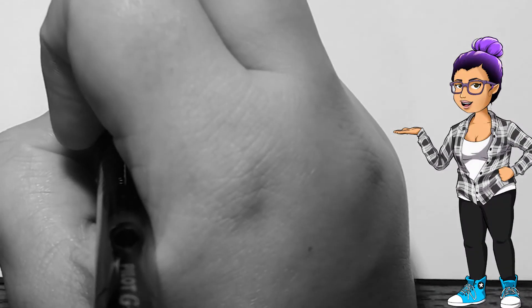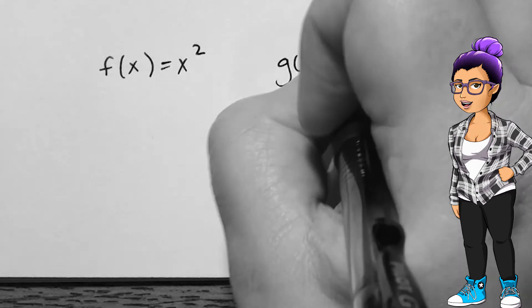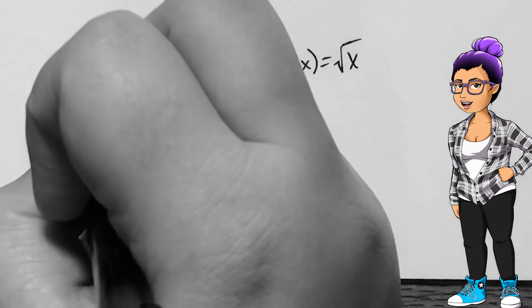Now I'll take f of x to be x squared and g of x to be the square root of x. When I find f of g of x, I get x. Good news again.